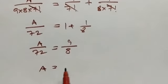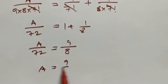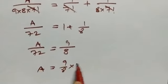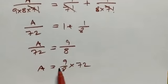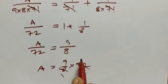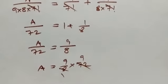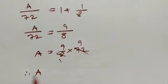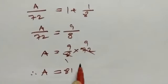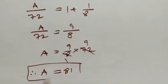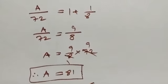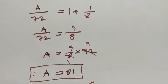So a equals 9 by 8 into 7 factorial, then multiply them — therefore a equals 9, answer 81. Thanks for watching.